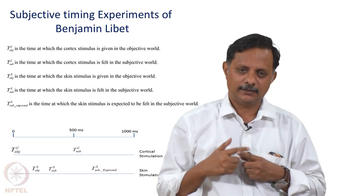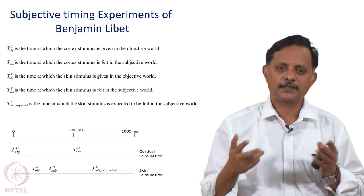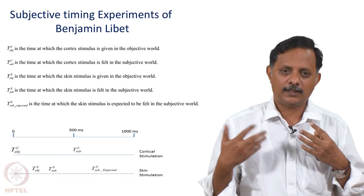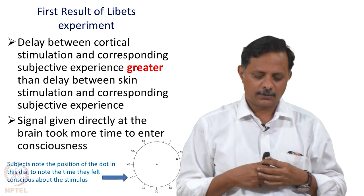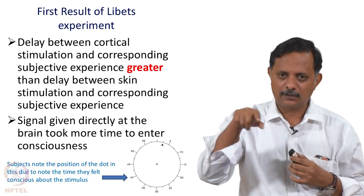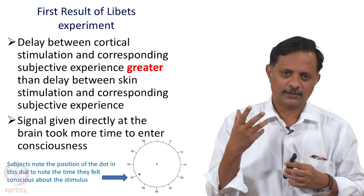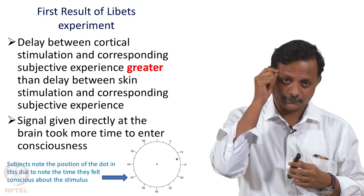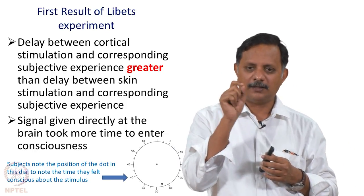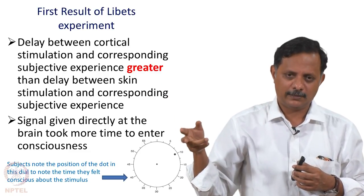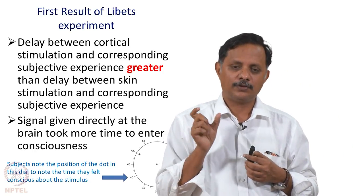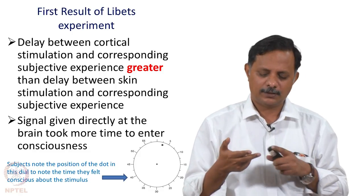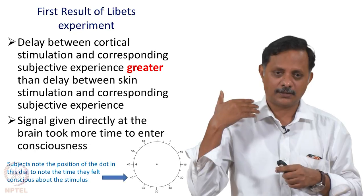To measure subjective time, subjects are shown a dial with a dot moving around it. When the subject feels that a stimulus has been received, they note the position of the dot on the dial, and this is averaged over many trials to time the subjective event. These are subjective timing experiments. When you stimulate the skin, it actually reaches consciousness much more quickly than direct cortical stimulation.